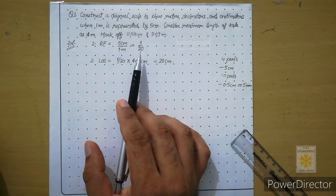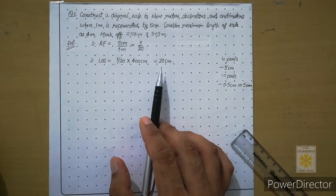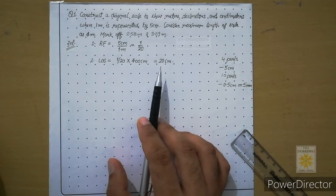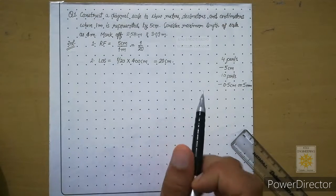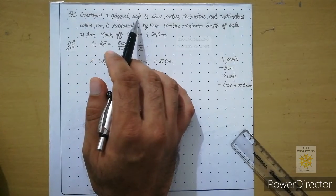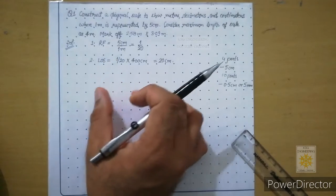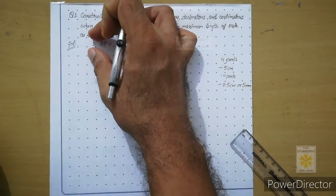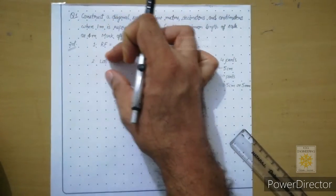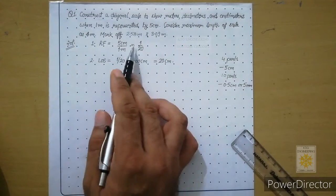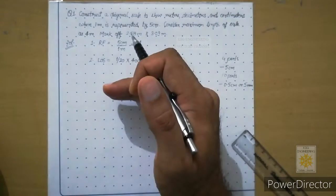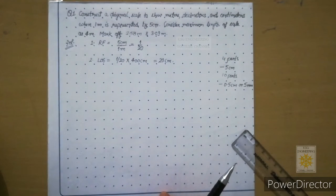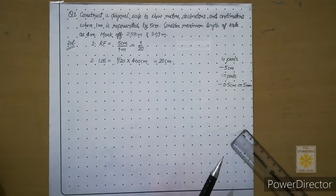In that lecture we found that RF for this is 1 by 20 and LOS is 20 centimeters. As we discussed in the construction of plane scale on the grid sheet, whenever you are solving any question on diagonal scale or plane scale, you first have to show the two calculations on the grid sheet — the calculation of RF and then the calculation of LOS with pencil in your handwriting. Then below those calculations you have to construct the scale.